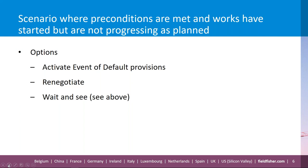Returning to the scenario where preconditions to the development agreement have been met, works have started but are not progressing as planned: the council can look to activate the event of default provisions within the development agreement — there is normally an obligation to commence works and continue them diligently. The second thing is to renegotiate the development agreement obligations, extending time periods and perhaps replanning what sort of works will be undertaken. The third option remains active wait and see: actively monitoring, recording, and having a good understanding of what the developer is proposing going forward.